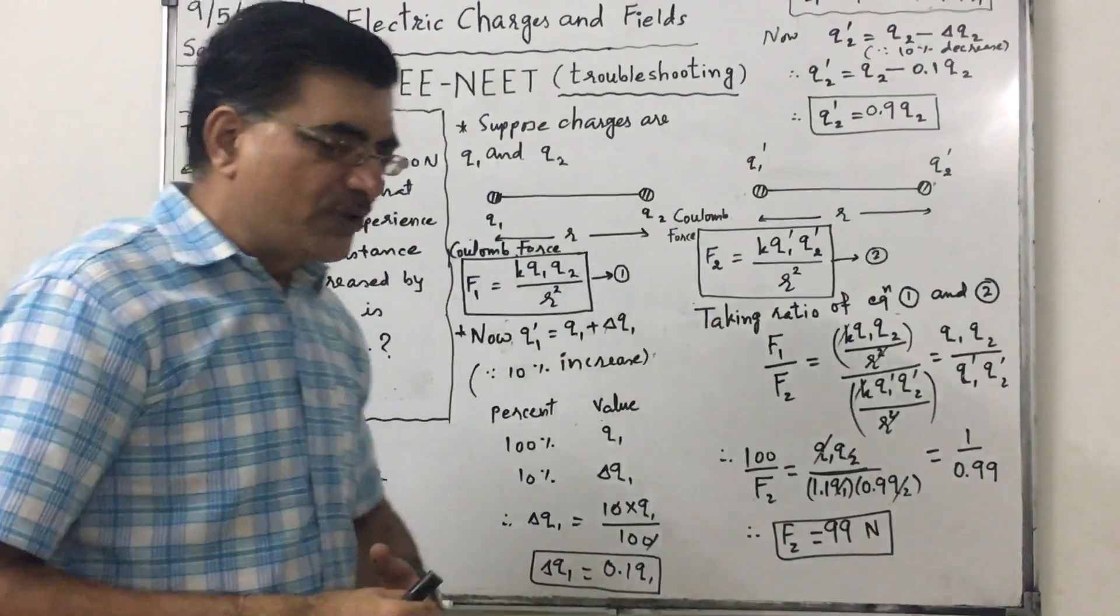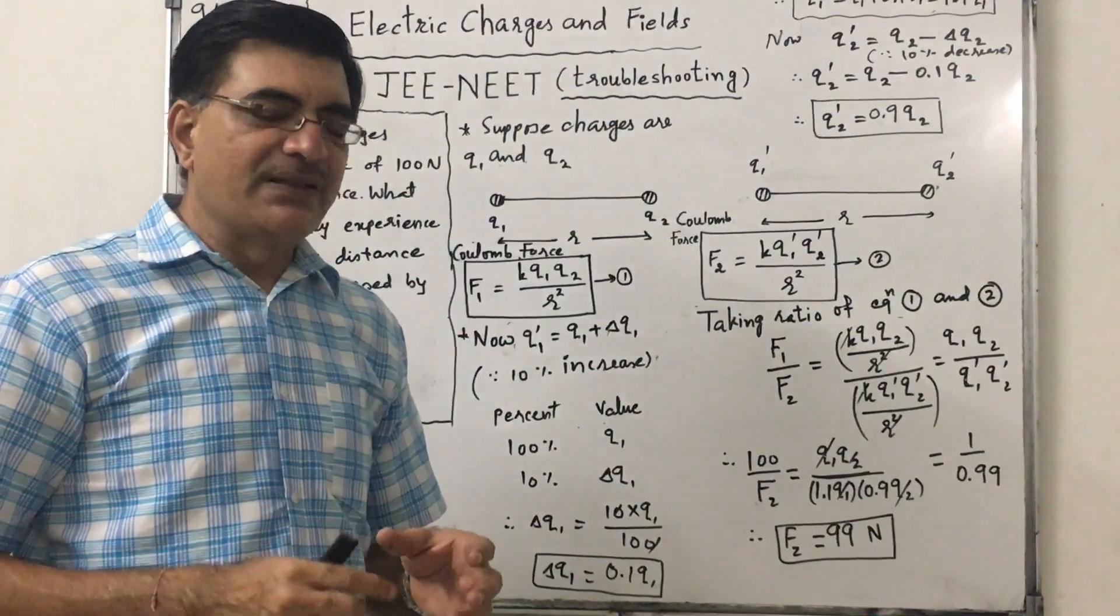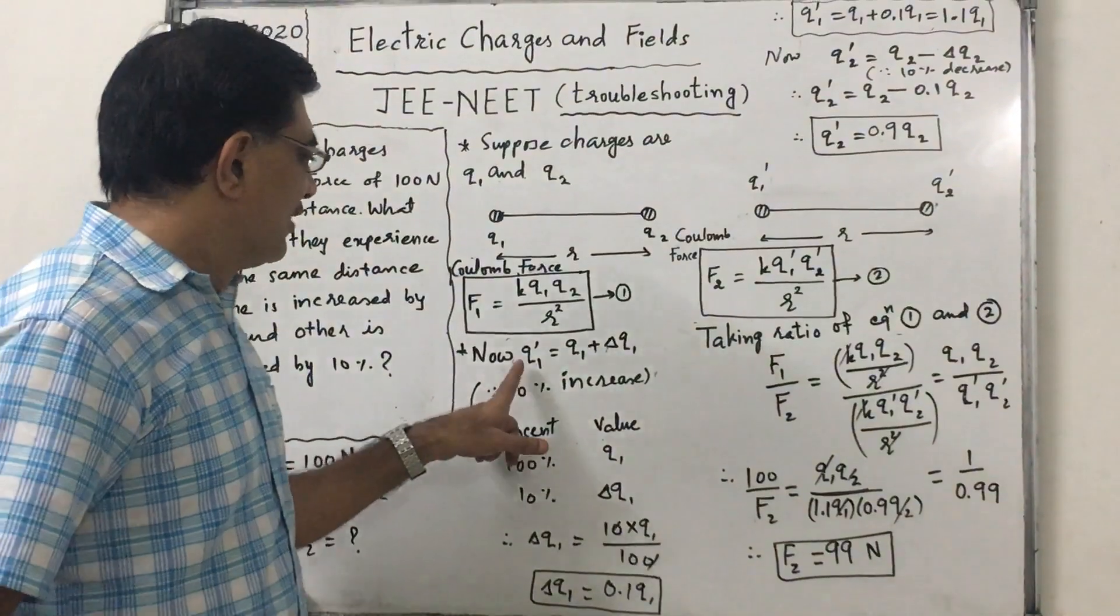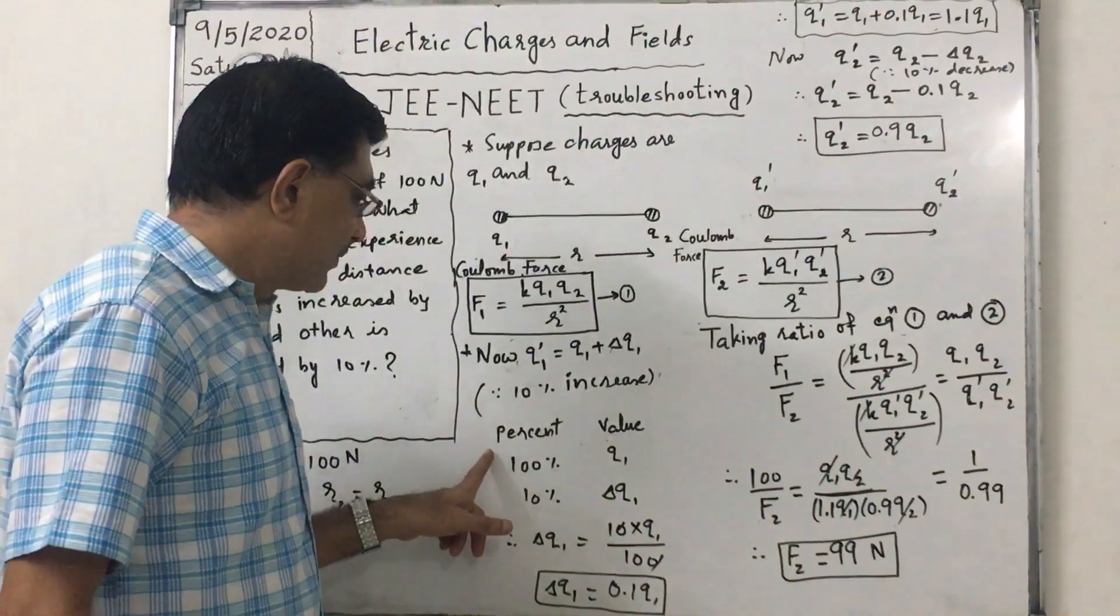Now suppose the first is increased by 10%. Say the increase is delta Q1. Then the final value is Q1 plus delta Q1. But what does that 10% mean? Let us calculate.